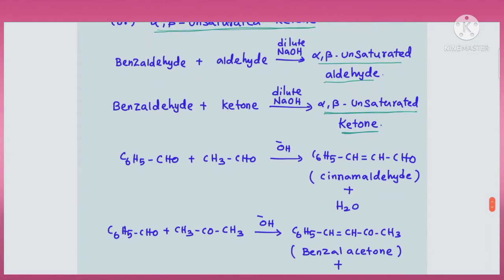In equation format: when benzaldehyde reacts with an aliphatic aldehyde in the presence of base, it gives an alpha-beta unsaturated aldehyde — this is the Claisen reaction. Alternatively, benzaldehyde reacts with an aliphatic ketone giving an alpha-beta unsaturated ketone. With benzaldehyde and an aldehyde you get an unsaturated aldehyde; with benzaldehyde and an aliphatic ketone the product is an unsaturated ketone.